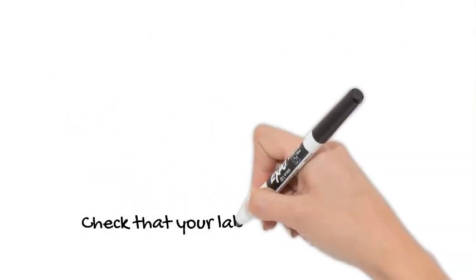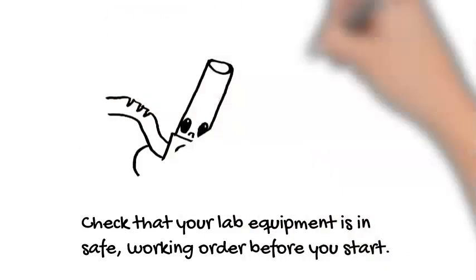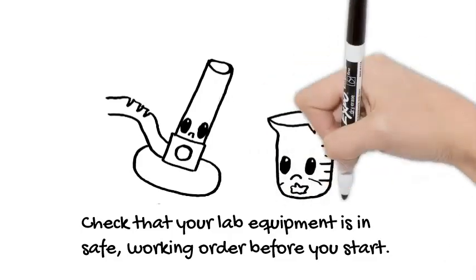Check that your lab equipment is in safe working order before you start. This means checking Bunsen burner hoses for any cracks and checking glassware for chips or cracks.